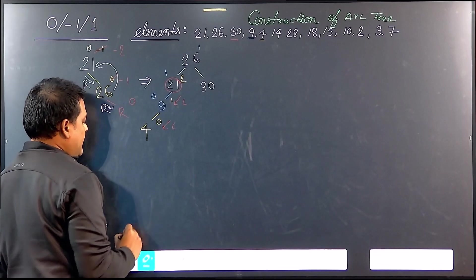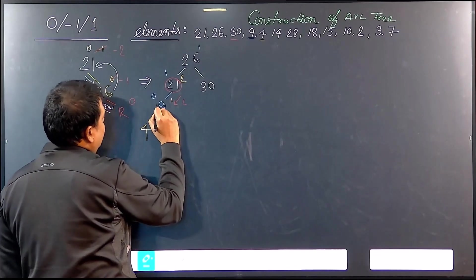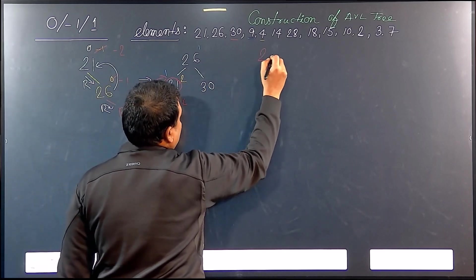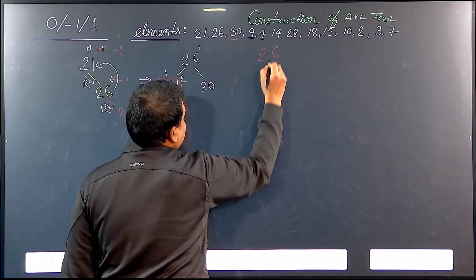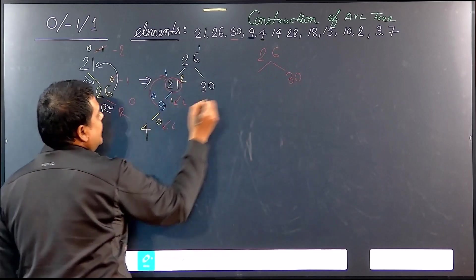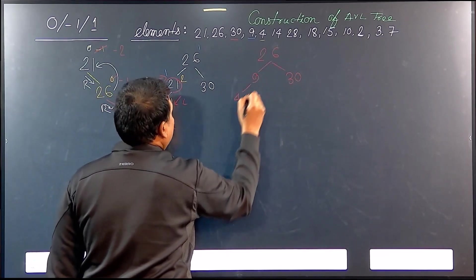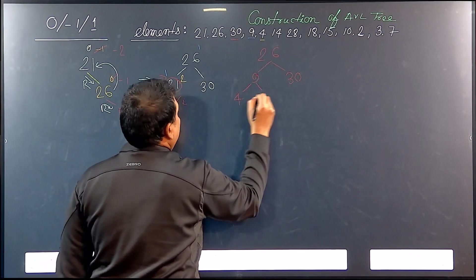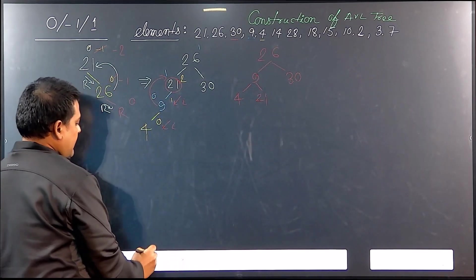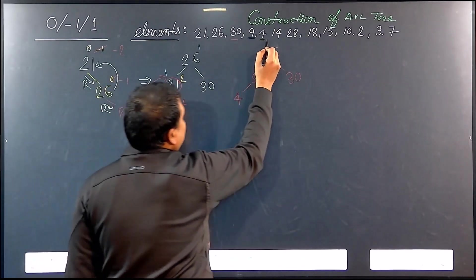So we will rotate. For a left-left imbalance, we rotate: 9 will come up and 21 will go down. After rotation, on the left side it is 4 and on the right side it is 21.